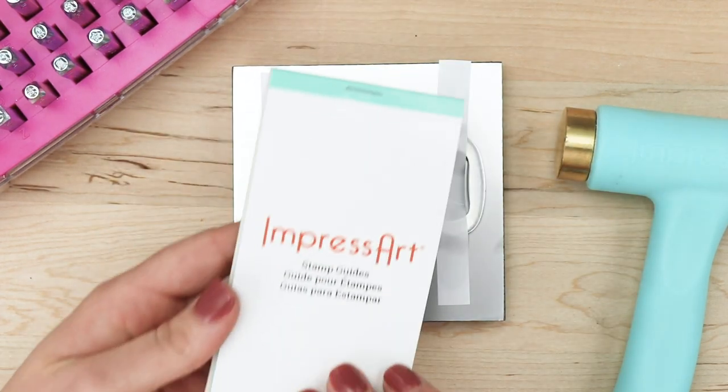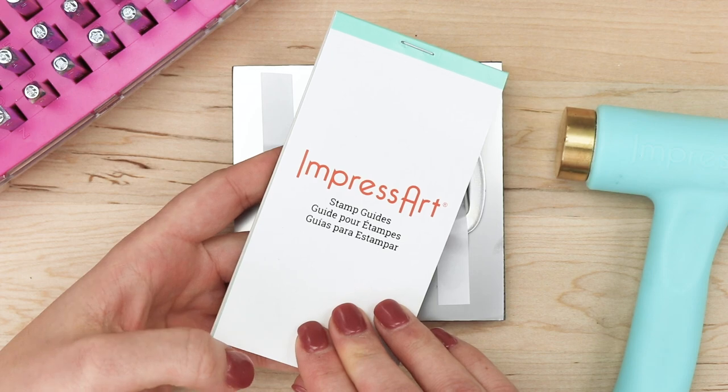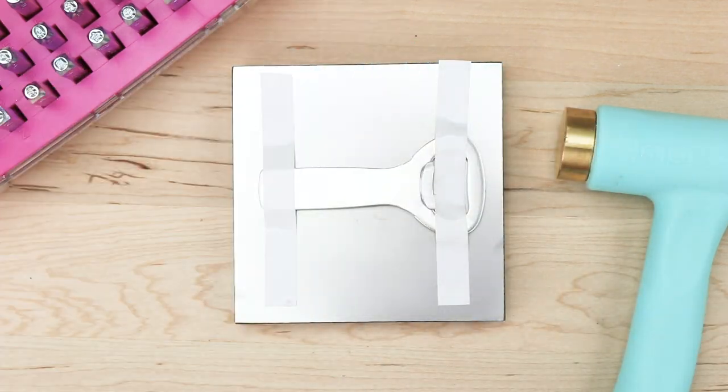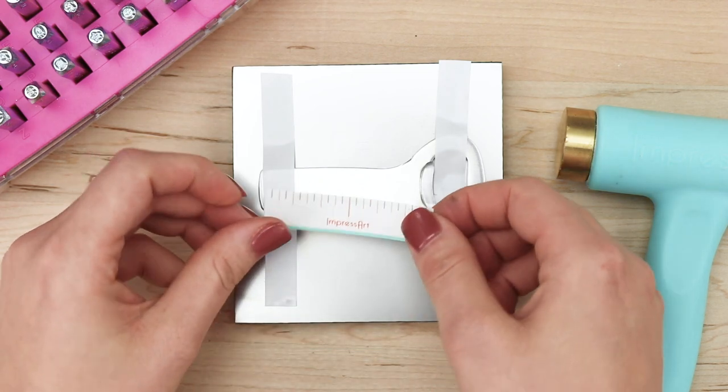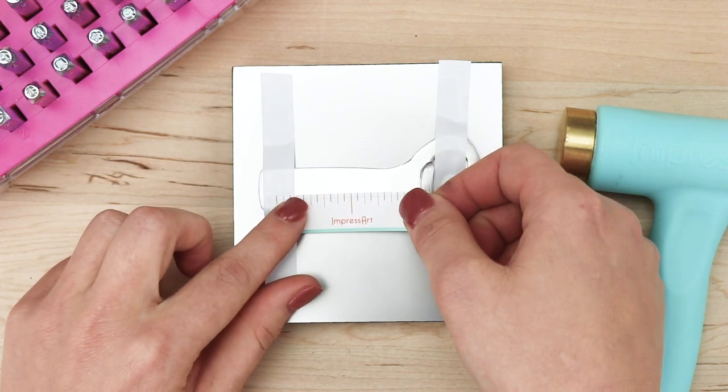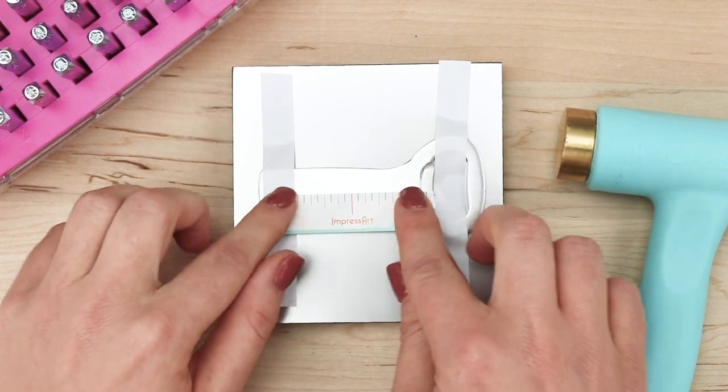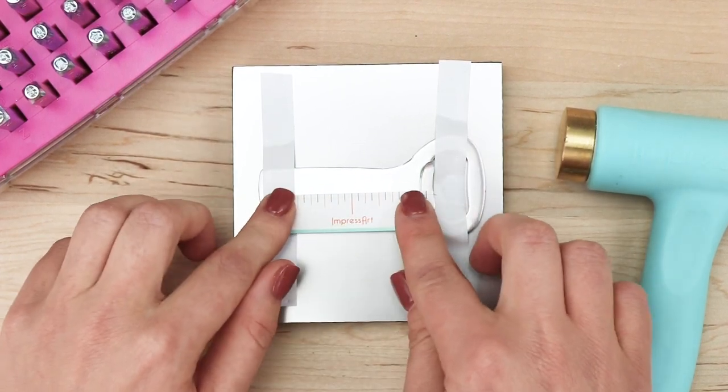Then take a straight stamp guide out of your stamp guide book and place it in the center of the bottle opener. This stamp guide will act as a ruler and help you evenly space out your letters and align your stamp impressions.